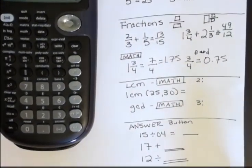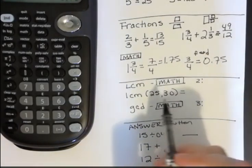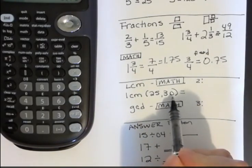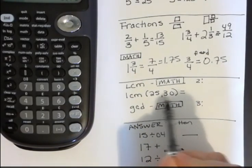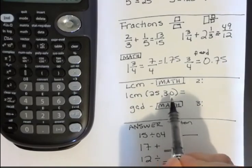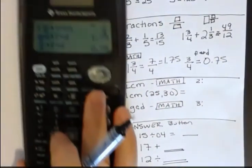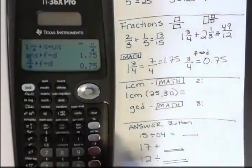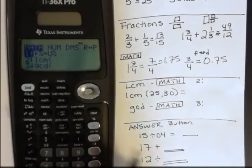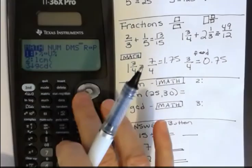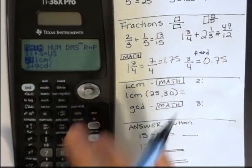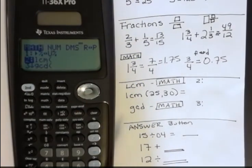You can find the least common multiple of two numbers, let's say I want to know the least common multiple of 25 and 30. Remember that's saying, what's the first number that 25 and 30 will both go into? So to get to that, you're going to go to math, and then go to number two. So I'm just going to use my arrow to go down, or I could have hit the number two.